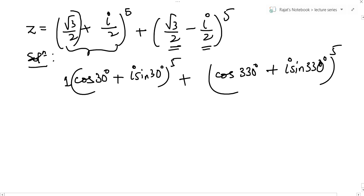What is the use of doing this? Now I will use De Moivre's theorem. De Moivre's theorem says that z to the power n is nothing but you bring this power in the cos. So this will become cos 150 degree plus i sin 150 degree.